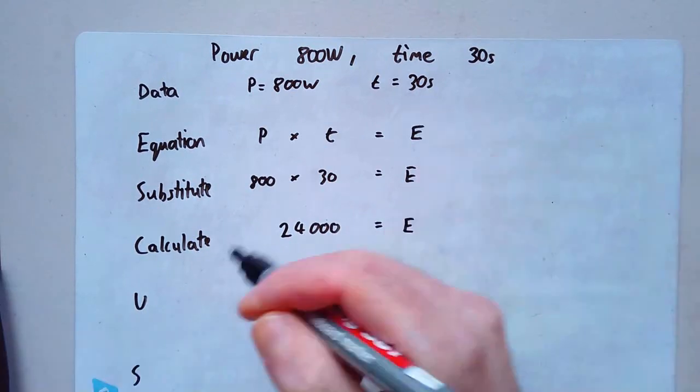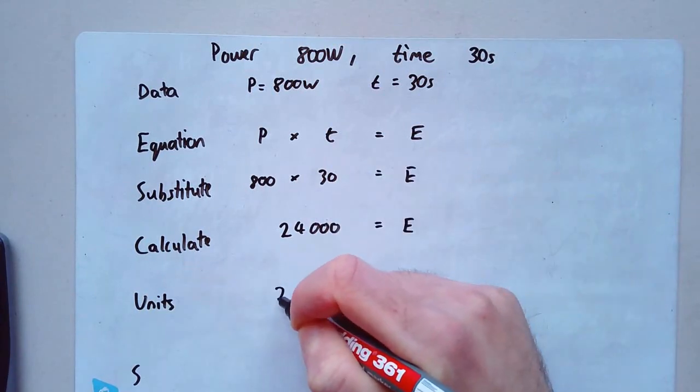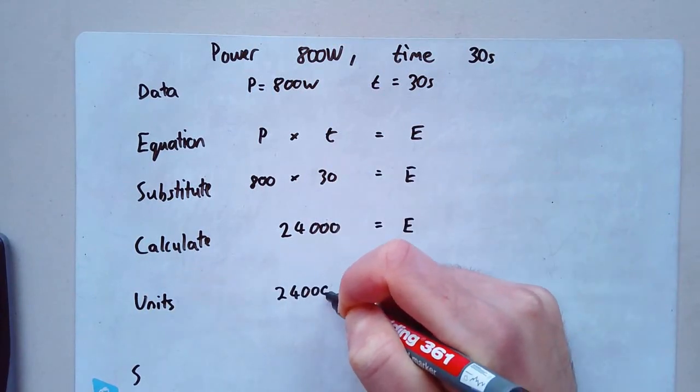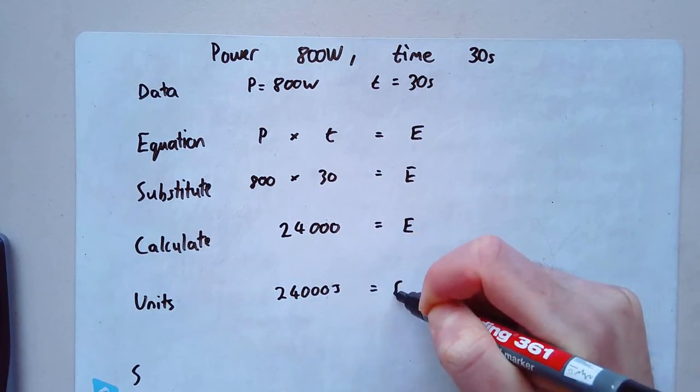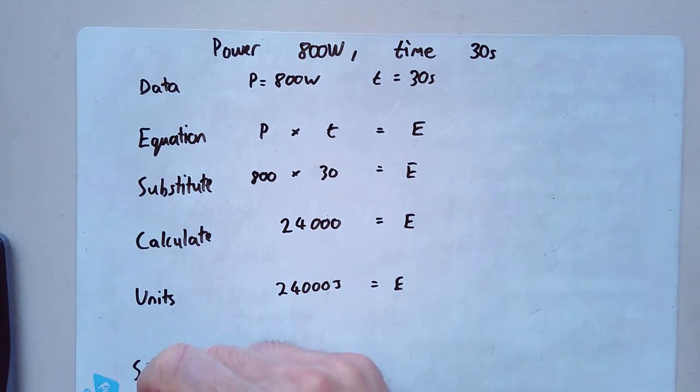U stands for units. And in this case, that will be joules. Now, S stands for significant figures.